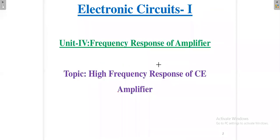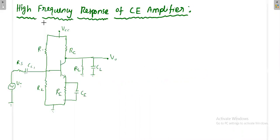Welcome to the course Electronics, Course 1, Unit 4. This video topic is the high-frequency response of the common emitter amplifier. We have already seen the frequency response for BJT amplifiers, and again this is the common emitter amplifier.